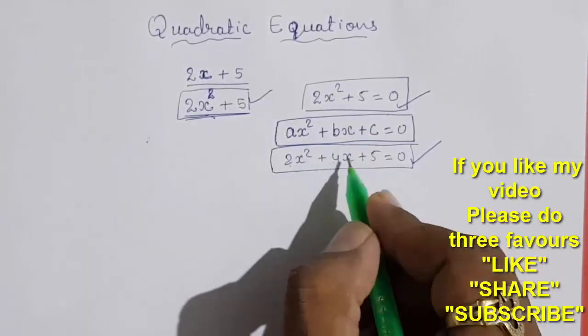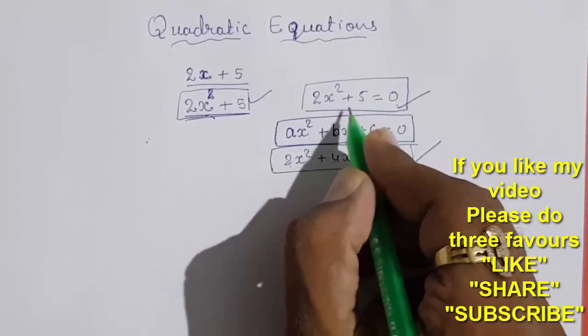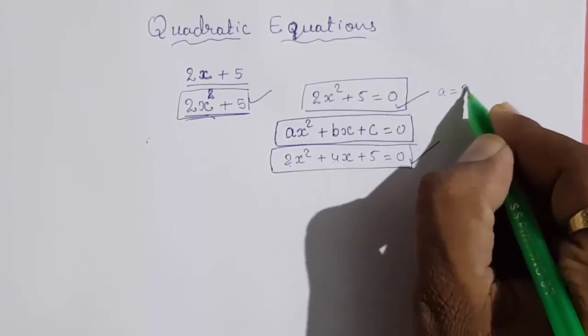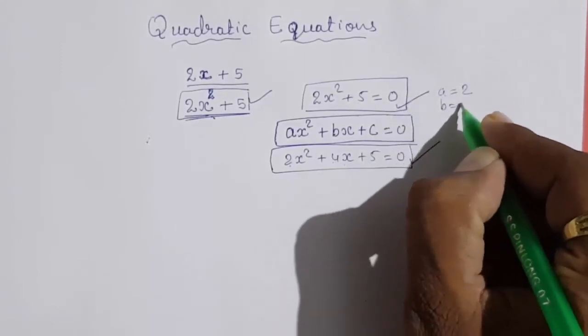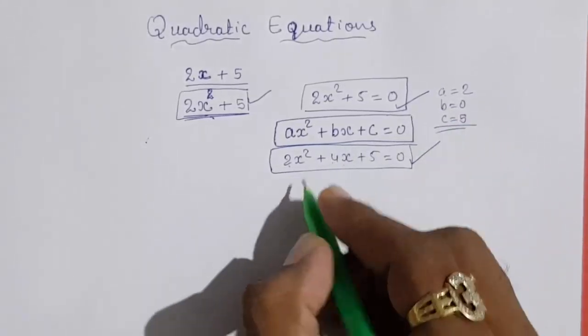So in quadratic equations, your b can be 0. Look here, here b is not there. Means the number with x is not there. So here you will get a equals 2, b is not there, b means b equals 0, and c is 5. Your b can equal 0.